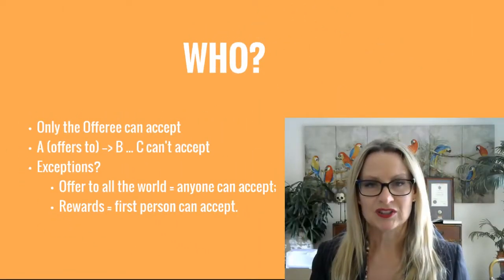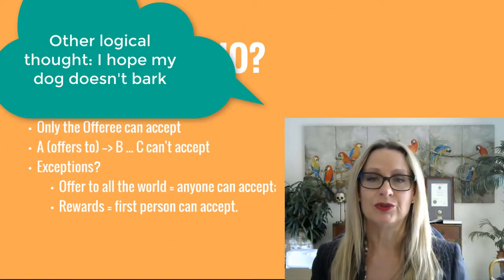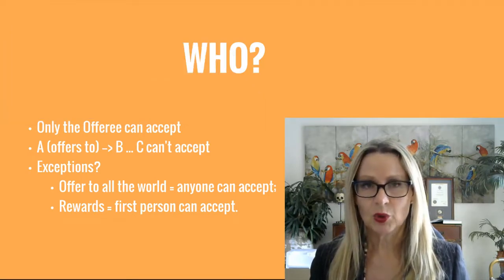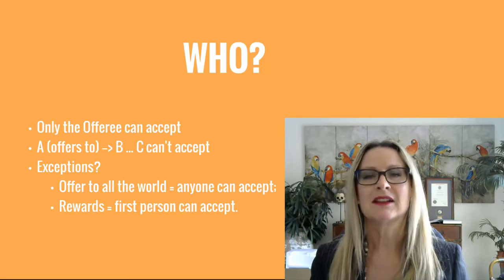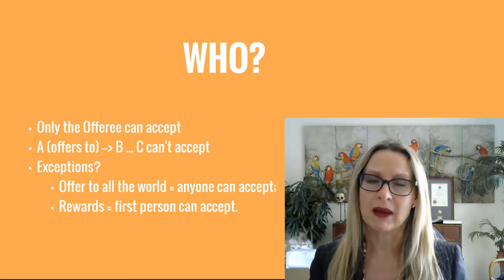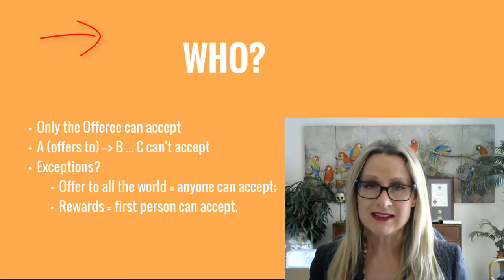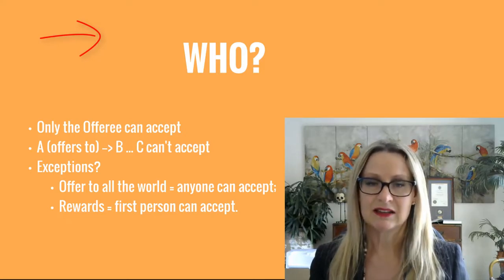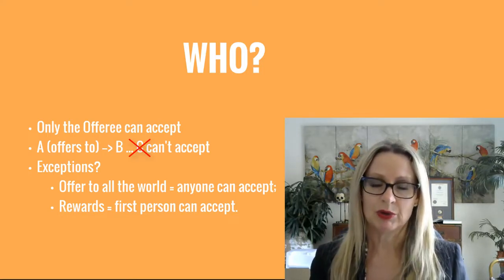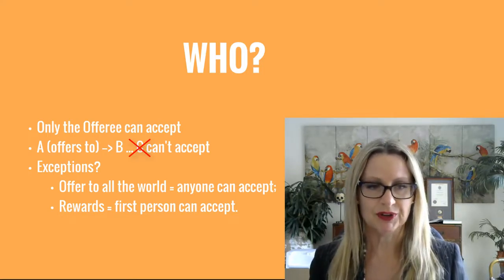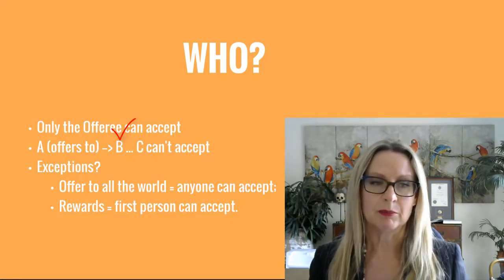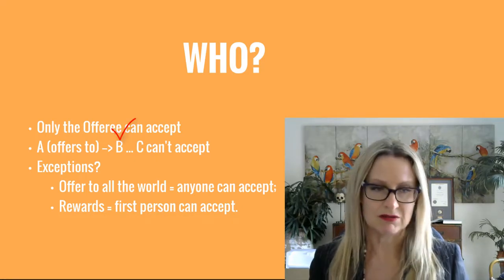So the next logical question is: who exactly can do the accepting? Well, only the offeree can accept. So if A makes an offer to B, only B can accept the offer. If C is standing by, they can't chip in and purport to accept the offer that was directed to B. We talk about privity elsewhere in this unit.